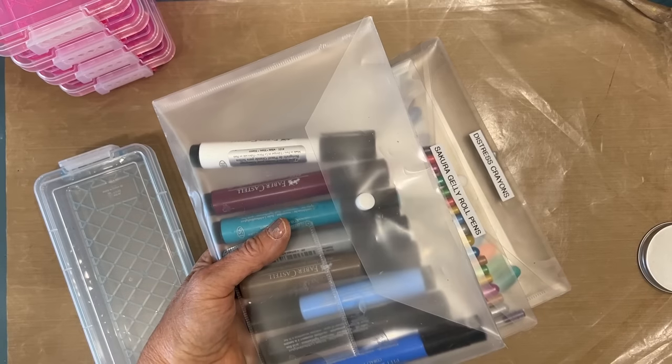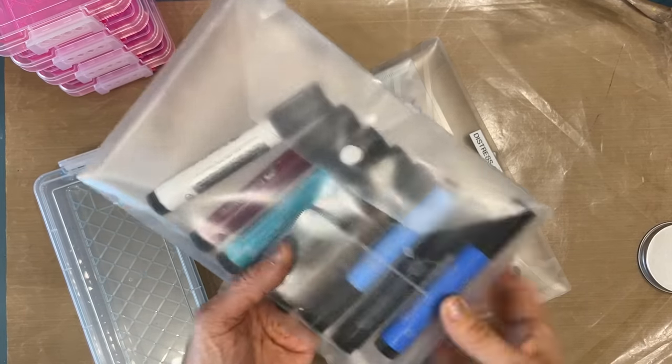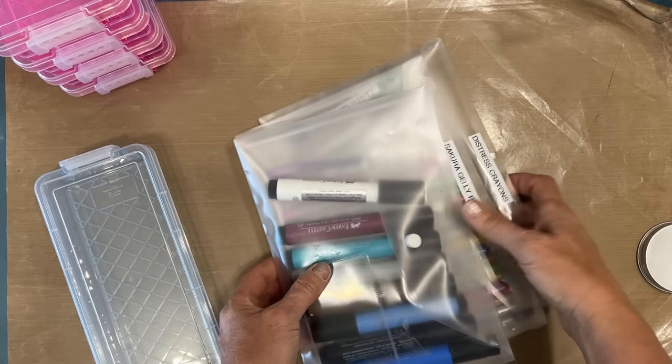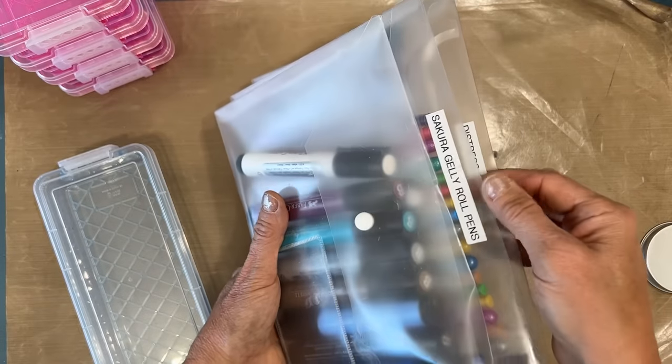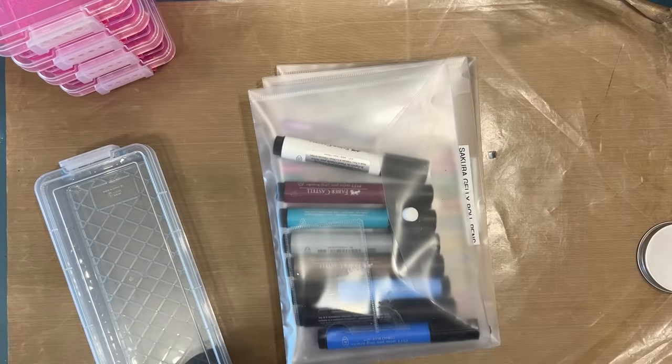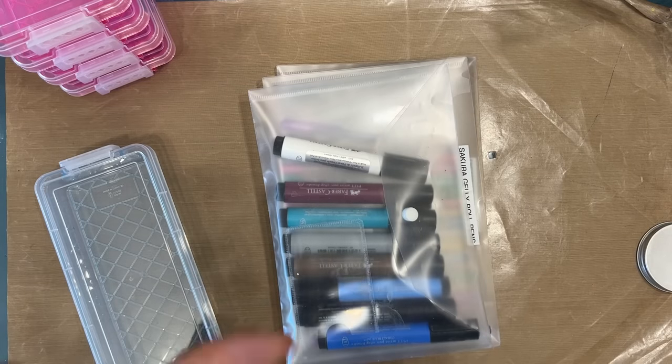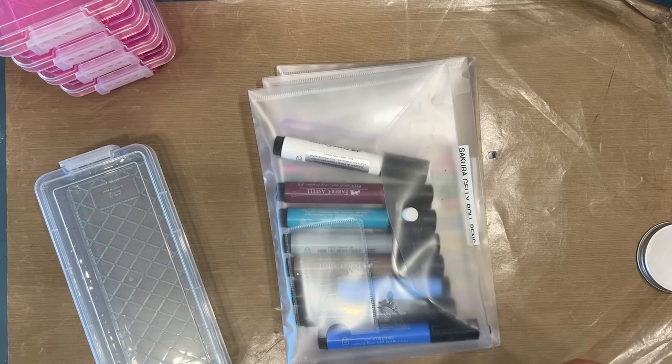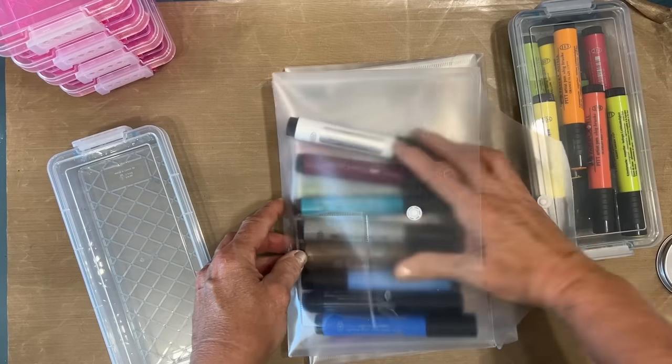So, when you're organizing, sometimes you make a decision to store things like in these plastic envelopes. And this worked rather well for my distress crayons, my jelly roll pens. But I found that as I was grabbing them, it was a little bit, it wasn't quite working as well as I wanted it to. So, I am going to upgrade to that.